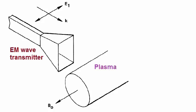This situation where E1 is parallel to B0 is known as an ordinary wave. If we had a situation where E1 was perpendicular to B0, then that's called an extraordinary wave.